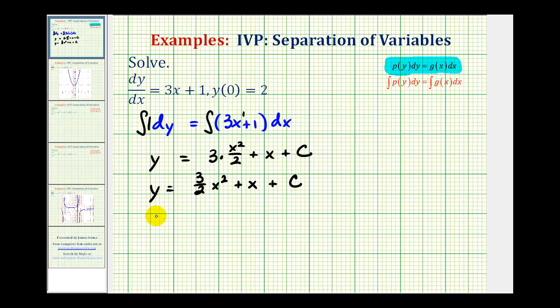Since we know y of zero equals two, y of zero would be equal to, replacing x with zero, we'd have three halves times zero squared plus zero plus c, but this must equal positive two. And since this would be zero and this would be zero, we can tell that c must equal two.